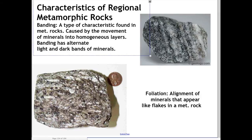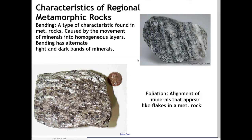Here are some examples of regional metamorphic rocks and their features. The first feature to know is called banding — the most extreme form. Banding is what we see in this rock where there's a dark area and a light area, almost like stripes: light, dark, light, dark across the whole rock. That is a clear indication of banding.